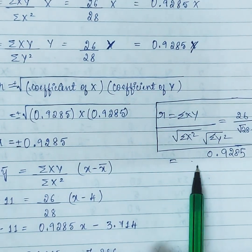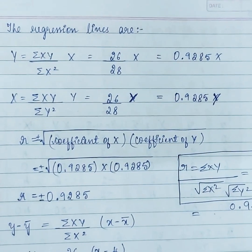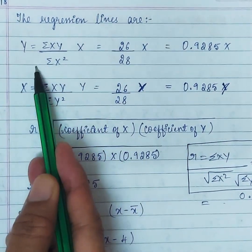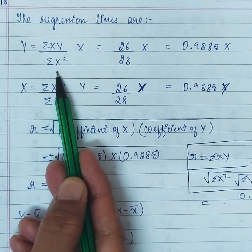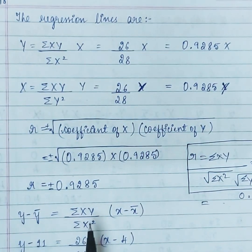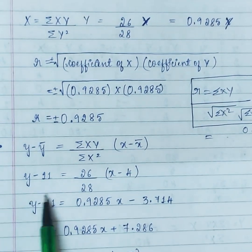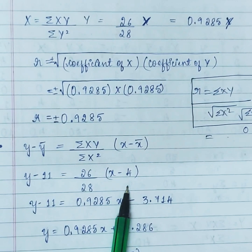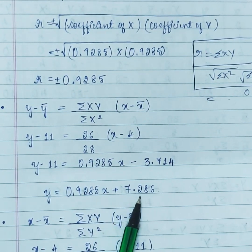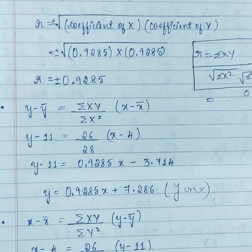I want you to try finding the regression lines on your own. If asked to find the regression line and hence find r, use this formula: Capital Y = (ΣXY / ΣX²) × Capital X, which expands to y − ȳ = (ΣXY / ΣX²)(x − x̄). Substituting: y − 11 = (26/28)(x − 4), which simplifies to y = 0.9285x + 7.286. This is the regression line of y on x.